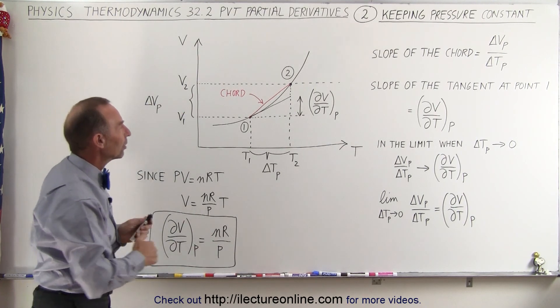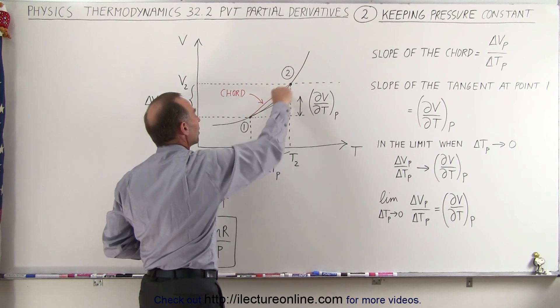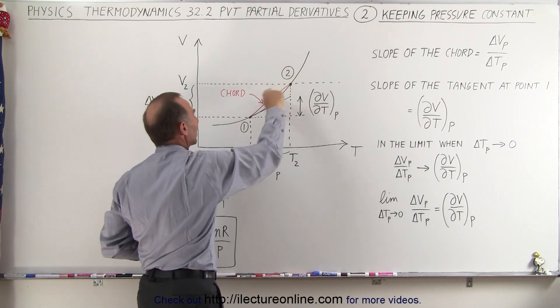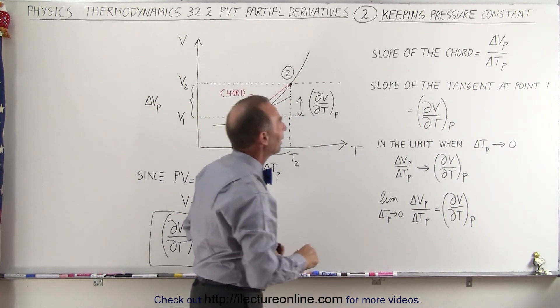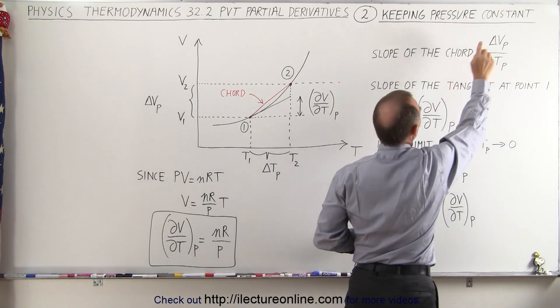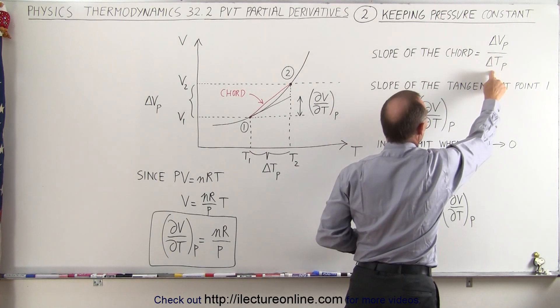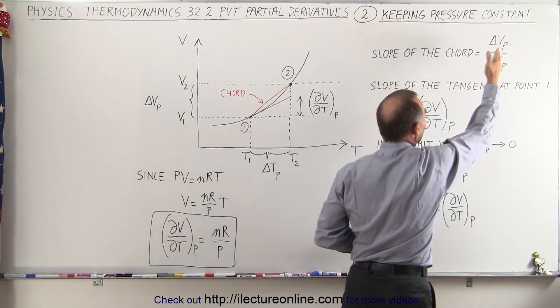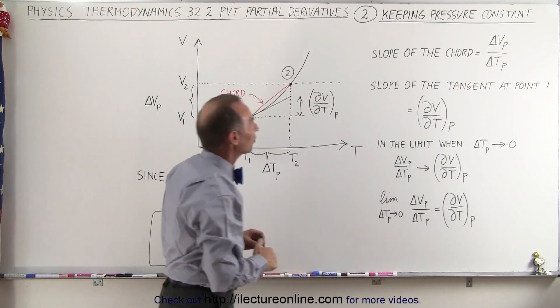We can draw a straight line between state 1 and state 2 — we call that the chord. The slope of the chord is simply the change in volume divided by the change in temperature, again indicating that the pressure remains constant.